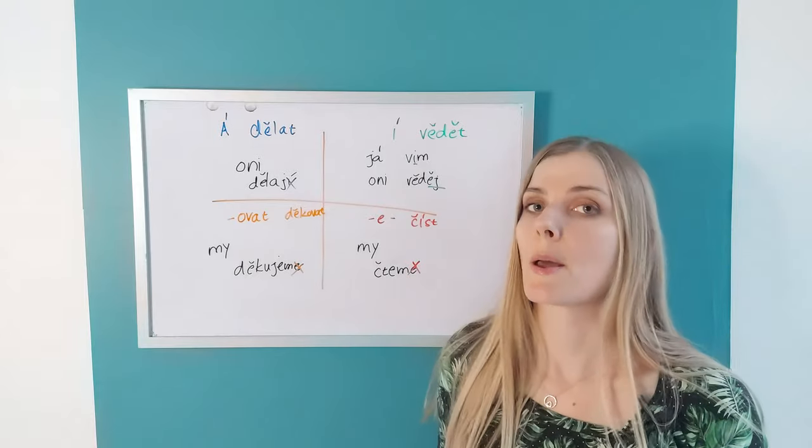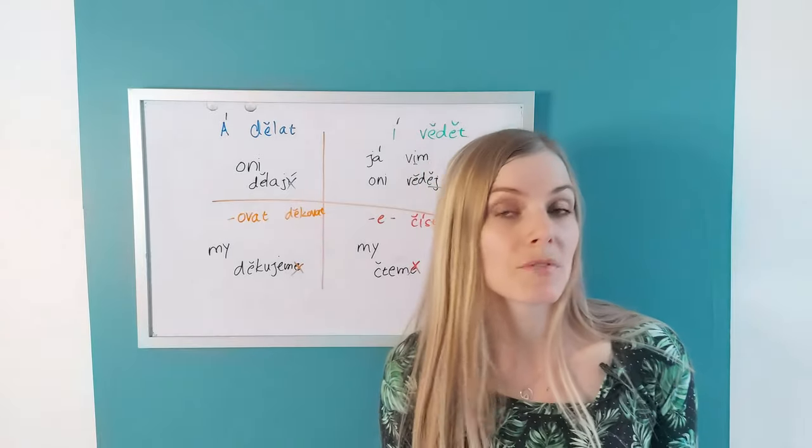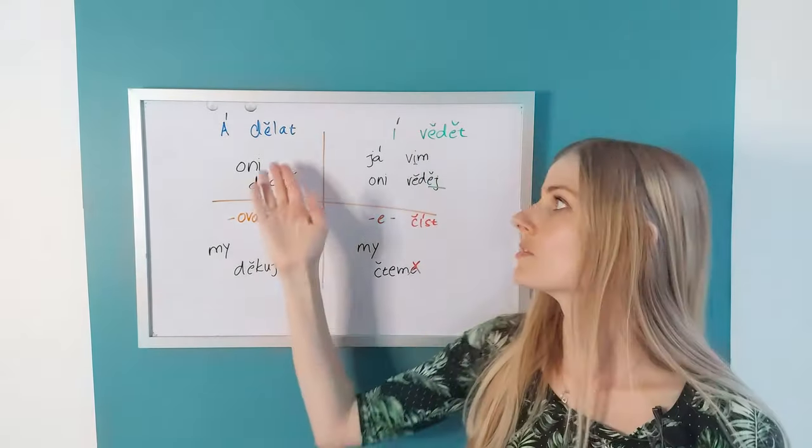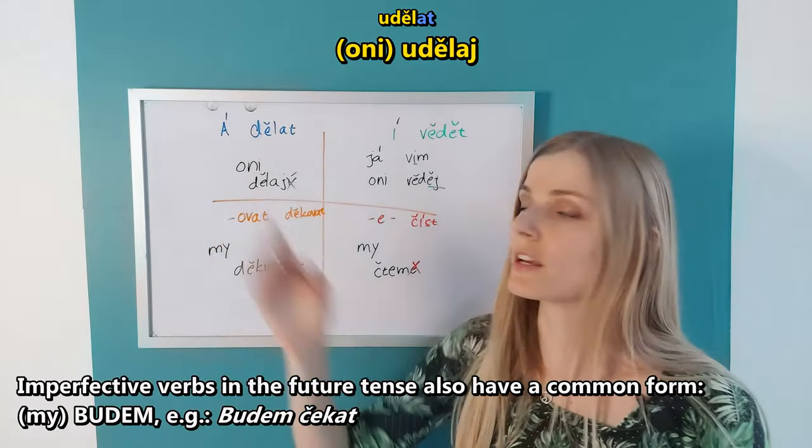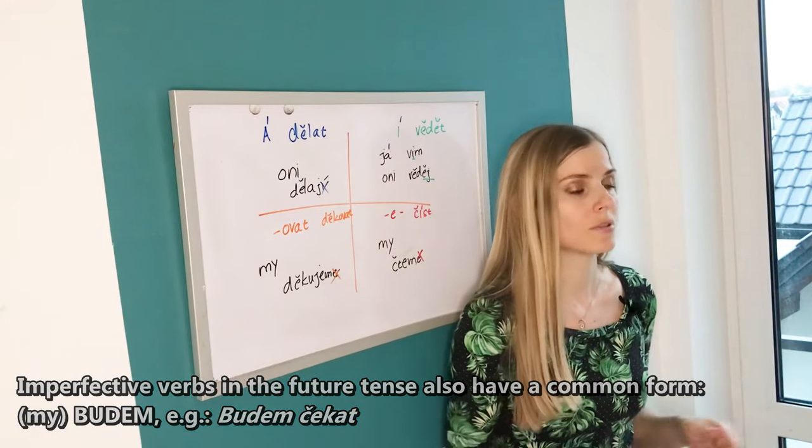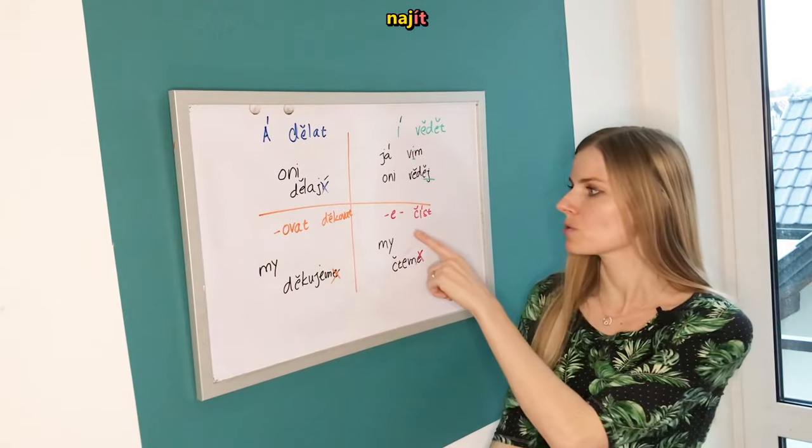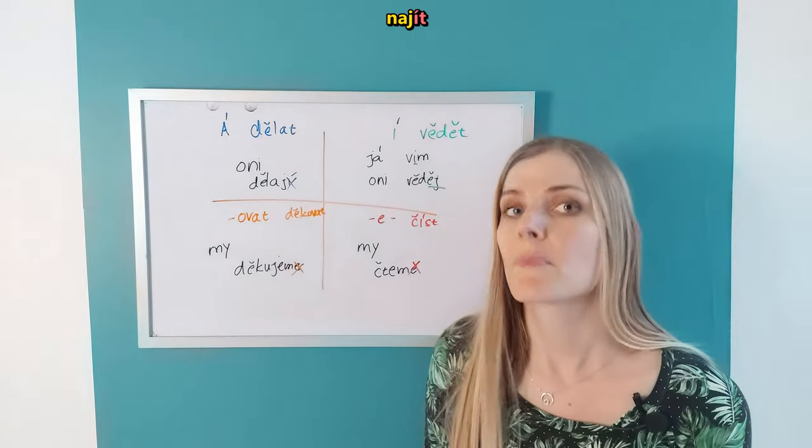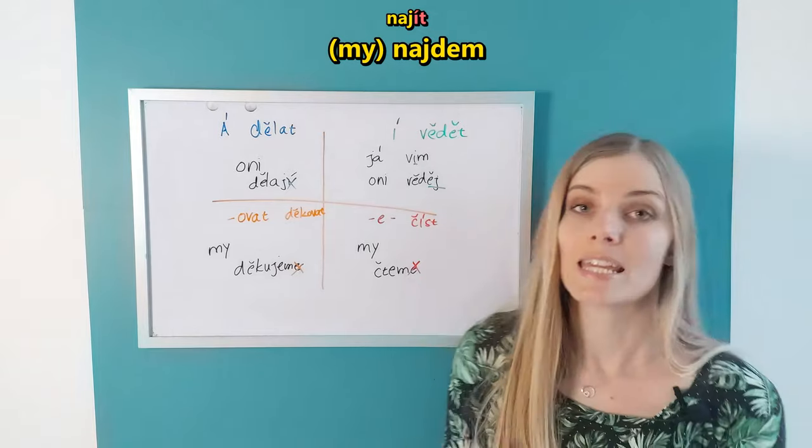Now, it actually doesn't affect only the present tense conjugation, also the future tense. All the perfective verbs that follow this conjugation. For example, if the verb dělat had a prefix udělat, it would be the same thing. Udělaj. Oni udělaj. For example, another perfective verb najít. To find. You say najdu, I will find. It falls into this group. Standard Czech is my najdeme. Najdeme. But the common Czech would be najdem. Taking away the last E.